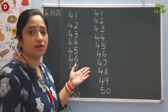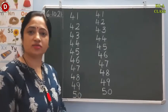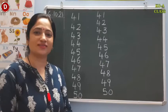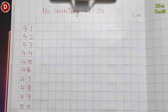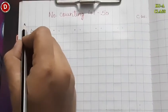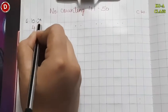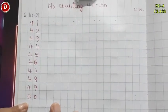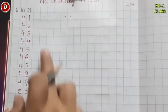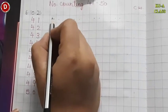So children, you have to learn number counting 41 to 50 and then write it in your maths notebook. Now I will show you how to write in your maths notebook. We will write number counting 41 to 50. First, write today's date — 6th October 2021. I have written 41 to 50 as the heading with a red line, then leaving the next line, I will write from the blue line.